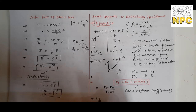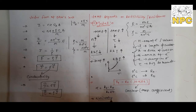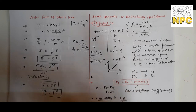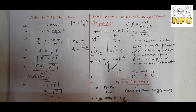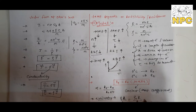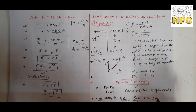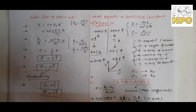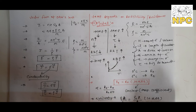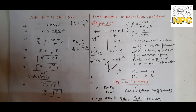Similarly for rho, you can write the same equation for resistivity. Because R equals rho times L by A, substituting R_T with rho_T times L by A and R naught with rho naught times L by A, and cancelling L by A from both sides, we get: rho_T equals rho naught times (1 plus alpha delta T). So the same equation holds for both resistance and resistivity — this is for metals.